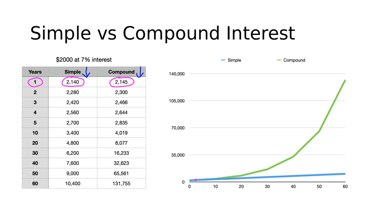If we jump ahead a bit, and we go to the five-year mark, now we can see that the money invested in simple interest is worth $2,700. The money invested using compound interest is worth $2,835. Still not a huge difference, but it is starting to spread out just a little bit.